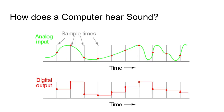Similarly, how a computer hears things: the analog sound signal is up top, and when the computer does its analog-to-digital conversion, it's converting that sound to ones and zeros. When the analog wave is high, it comes as a one, and when it drops down low, it gives us a zero over time.